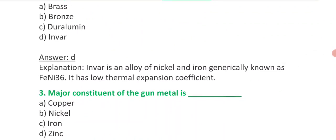Third question is: major constituent of the gun metal is - option A copper, option B nickel, option C iron, option D zinc.